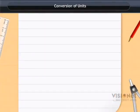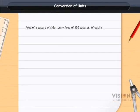Conversion of units. Area of a square of side 1 cm is equal to area of 100 squares of each side 1 mm. Therefore, 1 cm² = 100 × 1 mm², or 1 cm² = 100 mm².